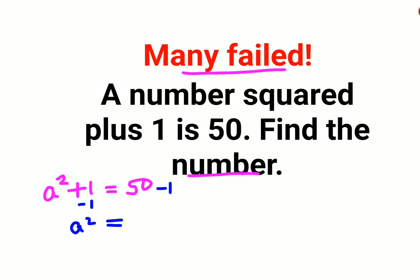So we have a squared plus minus 1 gets you 0. So a squared plus 0 gets you just a squared, and 50 minus 1 gets you 49.